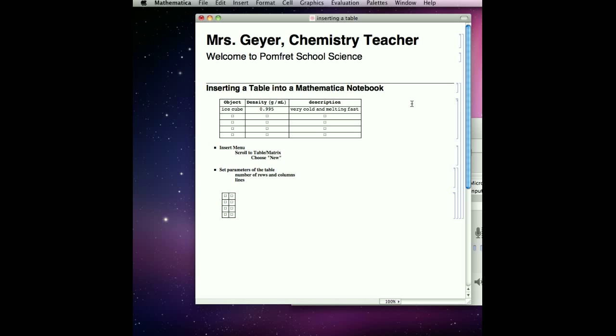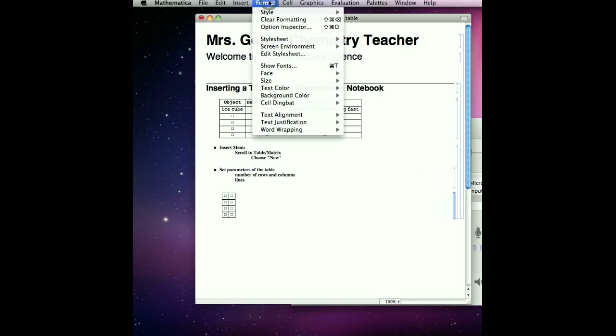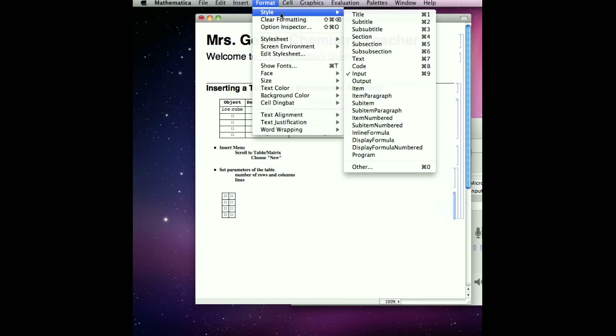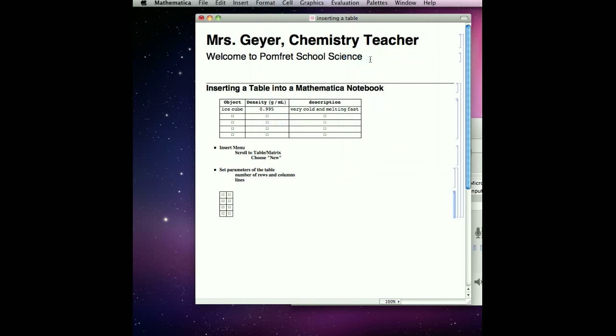When the table is in your notebook, you can then format the text. Click on the cell bracket. Under the Format menu, you can choose Format Style. I am going to choose Text, or you can use the keyboard shortcut Command-7.